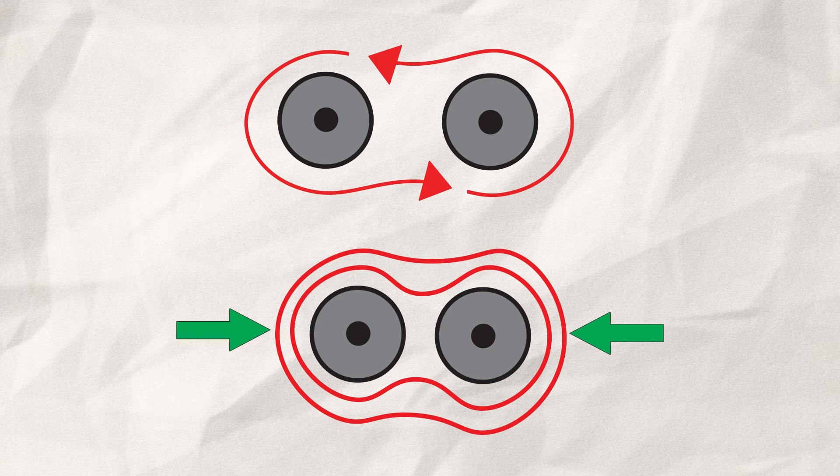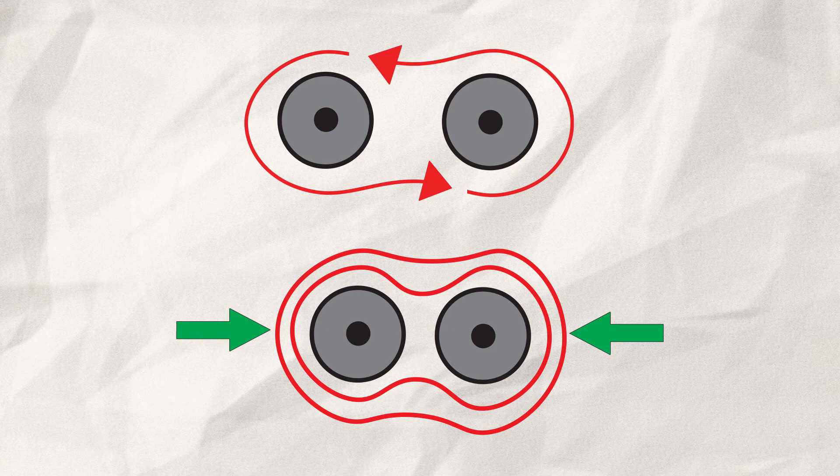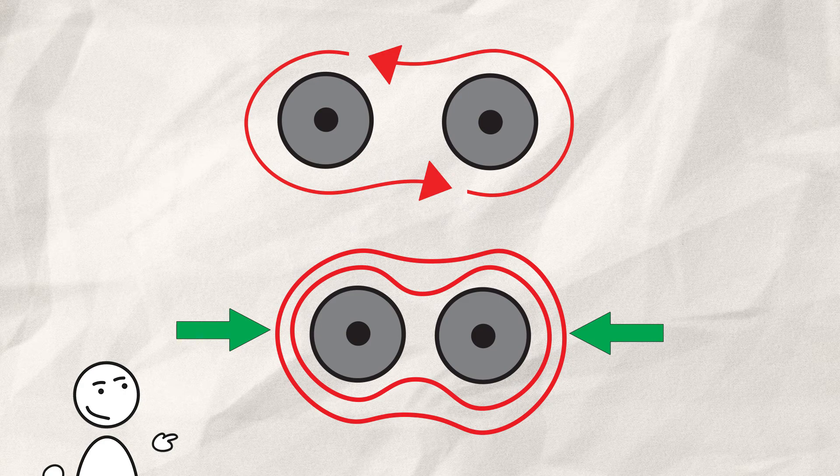This analogy also works for the last video on how magnets attract in the first place. Again, just think of the lines as stretched out rubber bands. The flux lines will behave in exactly the same way, causing the attraction or repulsion of objects. But back to our topic of electromagnets. We still have one unanswered question.